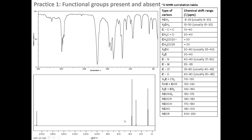Kia ora. Let's use the IR and the NMR together to work out what functional groups are present and absent. We've got 10 examples. Here's the first one.